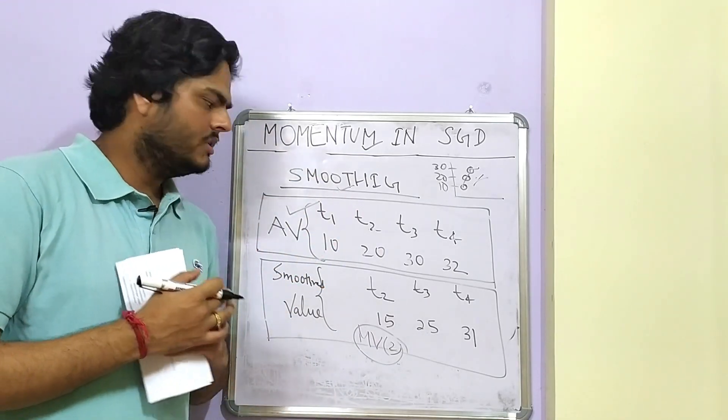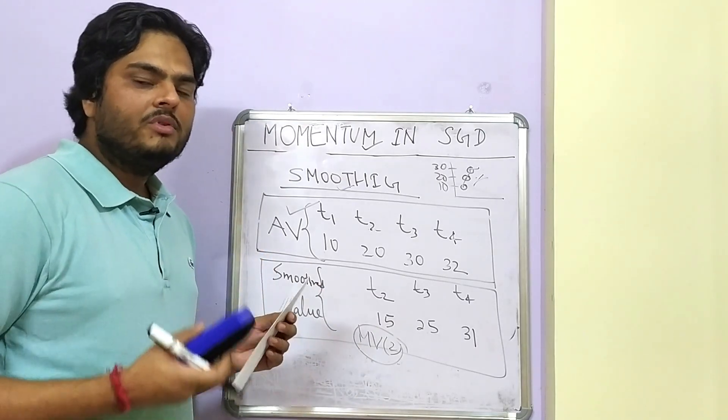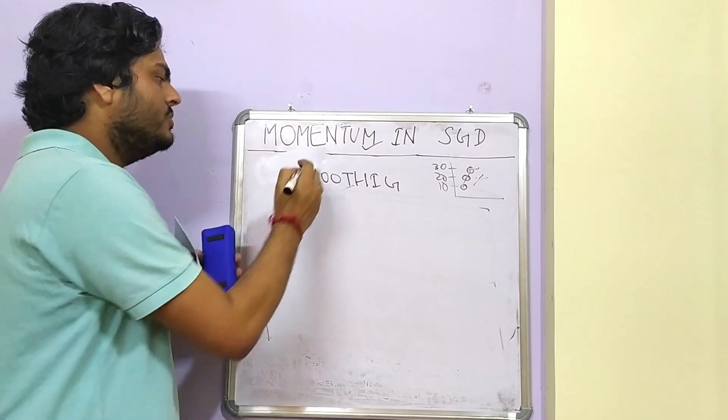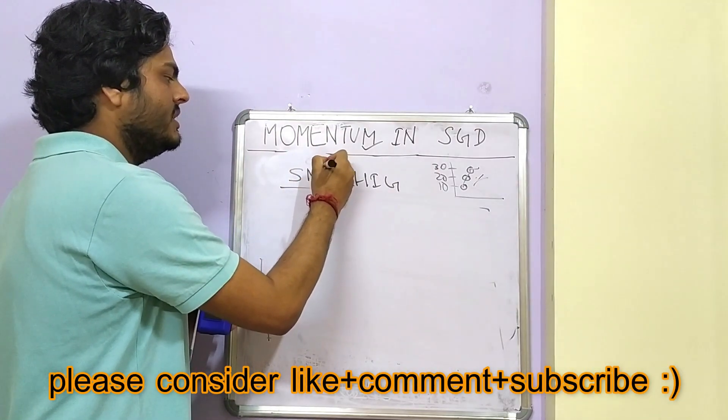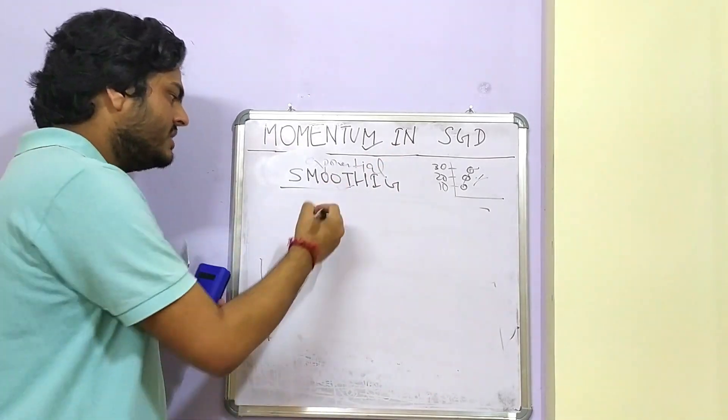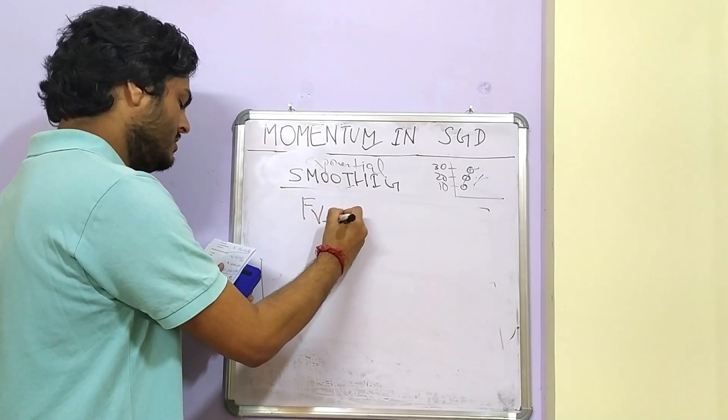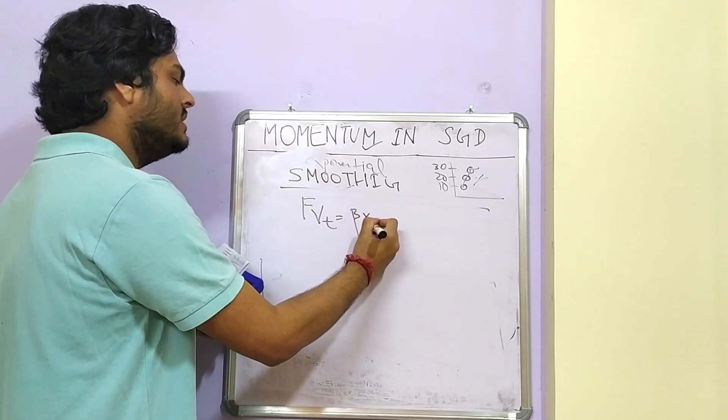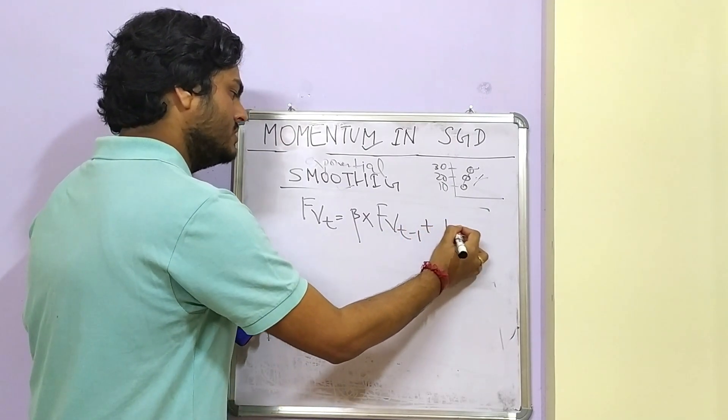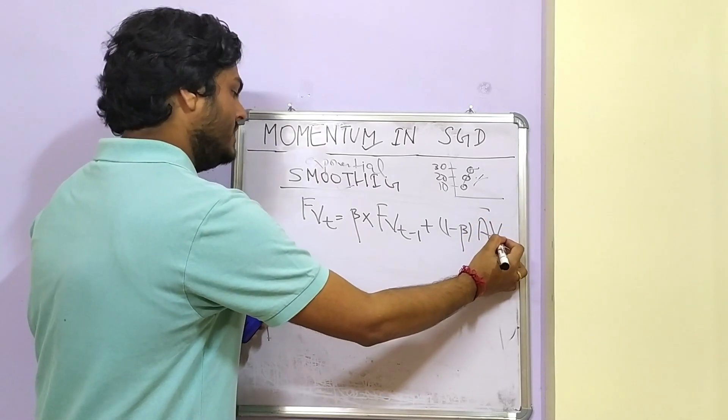Is there only one way to smooth the curve? Of course not. So what we have done here is known as moving average way of smoothing the curve. There is another way of smoothing the curve known as exponential smoothing.